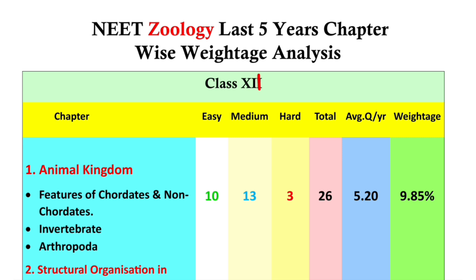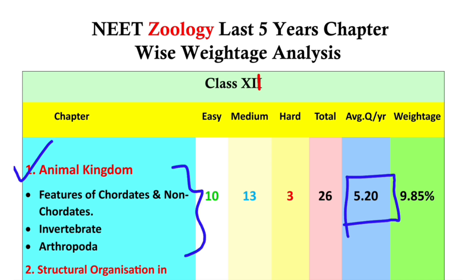The first important chapter is Animal Kingdom. On average, we have a few questions. Animal Kingdom has a field that covers important features. The field takes the basic questions from the previous years.